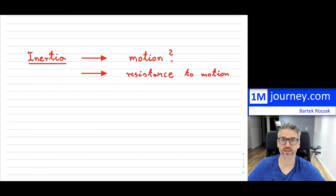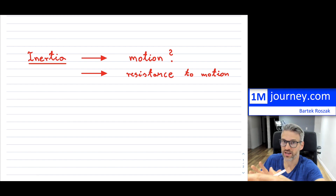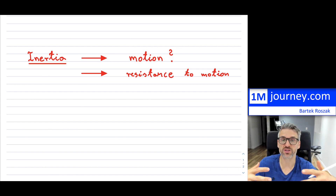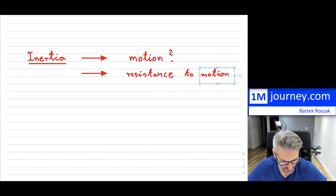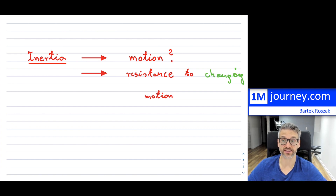Whenever someone mentions the word inertia, think about motion — how hard is it to try to change its motion in any way: slow it down, change its direction, or get a stationary object moving. If it has a lot of inertia, it's going to be difficult. A little pebble has little inertia, so it's easy. So the ideal summary: inertia is resistance to changing motion. You can tie it into mass, and it'll be easier to understand.